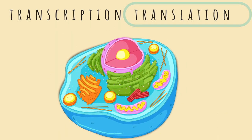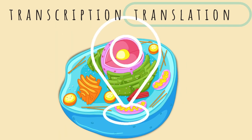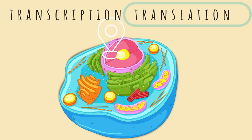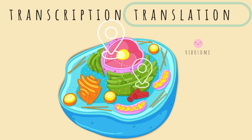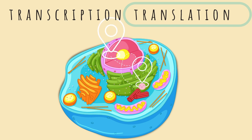To emphasize the big picture regarding location: transcription happens inside the nucleus of the cell. After mRNA is made, it travels to the ribosomes. You can find ribosomes on the endoplasmic reticulum or freely in the cytoplasm, though protein synthesis occurs more commonly in the ribosomes on the endoplasmic reticulum.